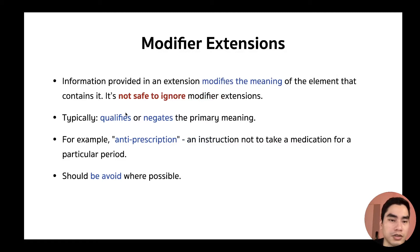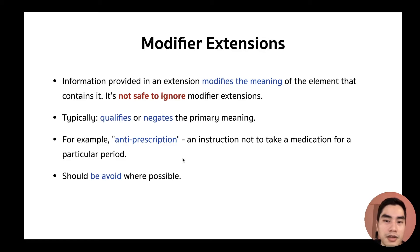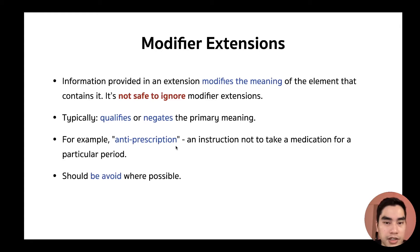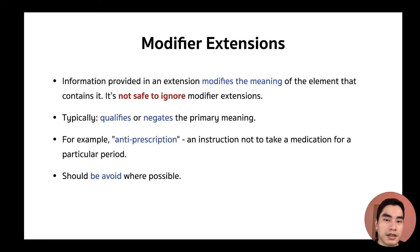Modifier extensions are typically used to qualify or negate the primary meaning. For example, 'anti-prescription' is an instruction not to take a medicine for a particular period. Normally we order a medicine for a patient to take. But if we attach an anti-prescription modifier extension to a MedicationRequest resource, that significantly changes the meaning — ordering not to take medication is completely opposite to ordering to take it. Because people might accidentally ignore this, it should be avoided if possible. If you cannot avoid it, you can use it, but do so only when necessary.